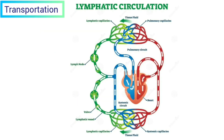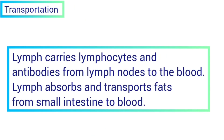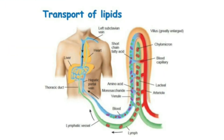What is transportation? Lymph helps in transporting nutrients and hormones to the body cells. It also removes waste materials from the body cells to the tissues and finally pours them into veins. Lymph nodes produce lymphocytes, and lymph carries these lymphocytes and antibodies from the lymph nodes to the blood. Lymph also absorbs and transports fats — fatty acids and glycerol — from the small intestine into the blood.